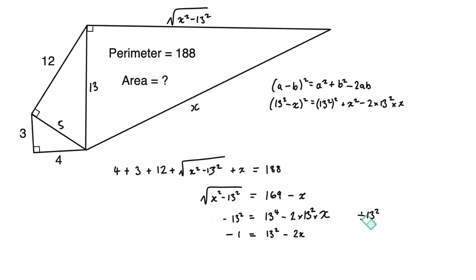And if I divide the final term, two times 13 squared times X by 13 squared, I'll just be left with 2X. So we have quite an easy equation that gives us 2X equals 170 or X equals 85.